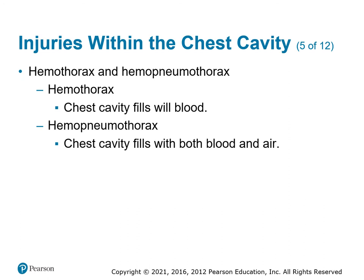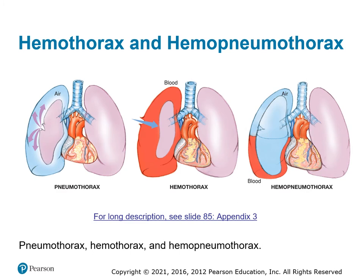Hemothorax is similar but involves blood filling up the cavity. Hemoneumothorax is blood and air mixed together. So you have pneumothorax with air filling the void, hemothorax with blood filling the void, or hemoneumothorax doing both.